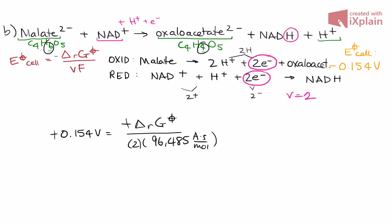These two negatives cancel. So once we solve, we get delta G, biological standard conditions, is equal to negative 29,717.38 joules per mole, or 29.73 kilojoules per mole.